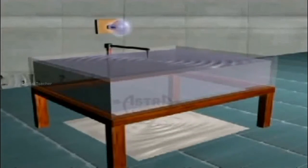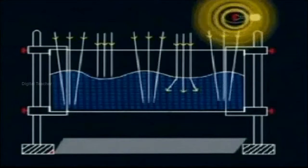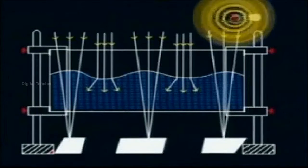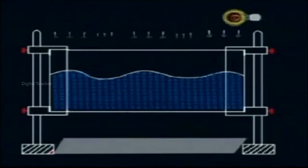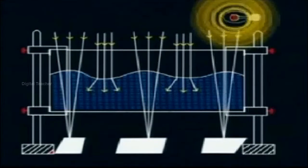The crests of water waves behave as a convex lens and the troughs as a concave lens. In the case of a trough, the light diverges and forms a dark band. In the case of a crest, the light converges and forms a bright band.